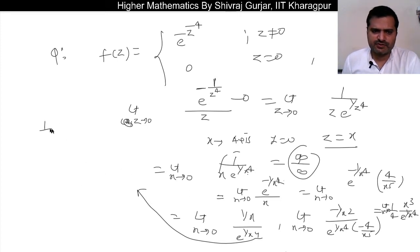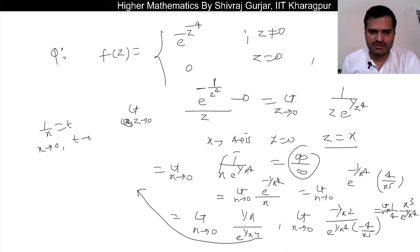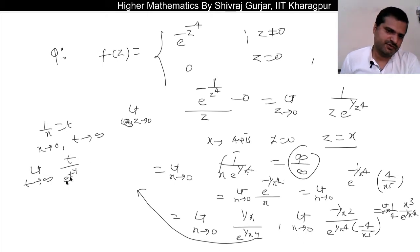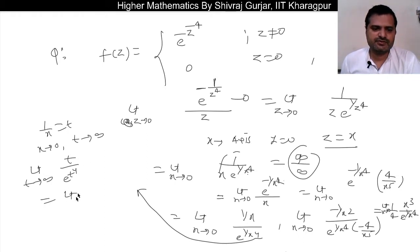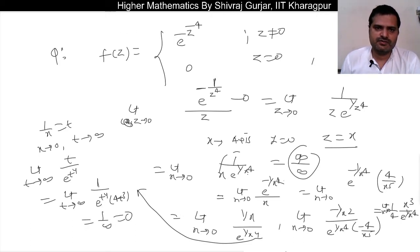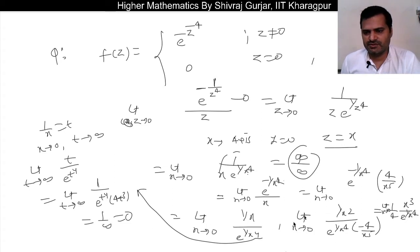Let us substitute t = 1/x. As x→0, t→∞, so the limit becomes limit t→∞ of t / e^(t⁴). This is again ∞/∞ form. Differentiating: the numerator derivative is 1, and the denominator derivative is 4t³·e^(t⁴). As t→∞, e^(t⁴) → ∞, so 1/∞ = 0. So the limit along the x-axis is 0.